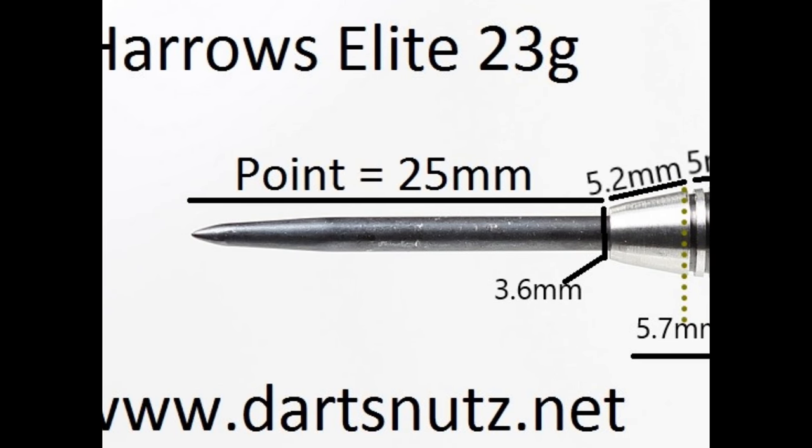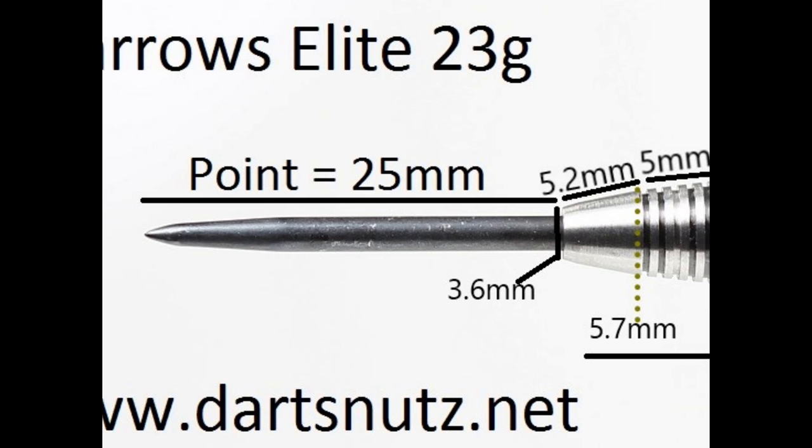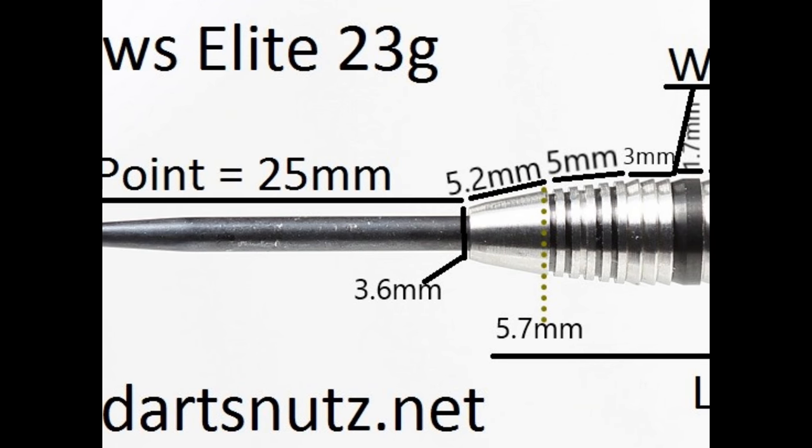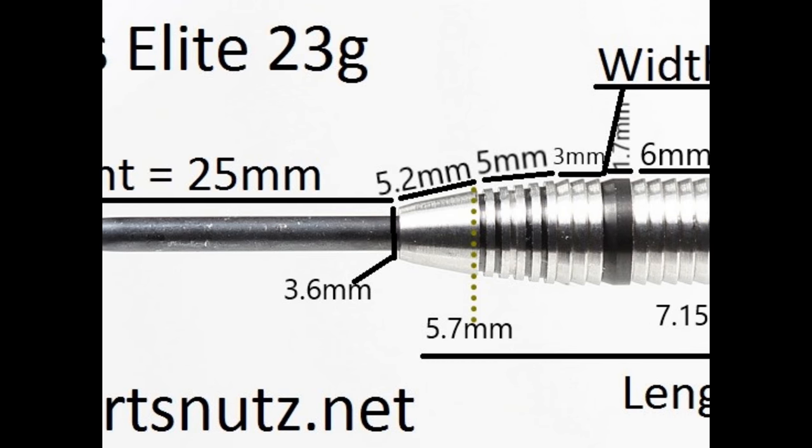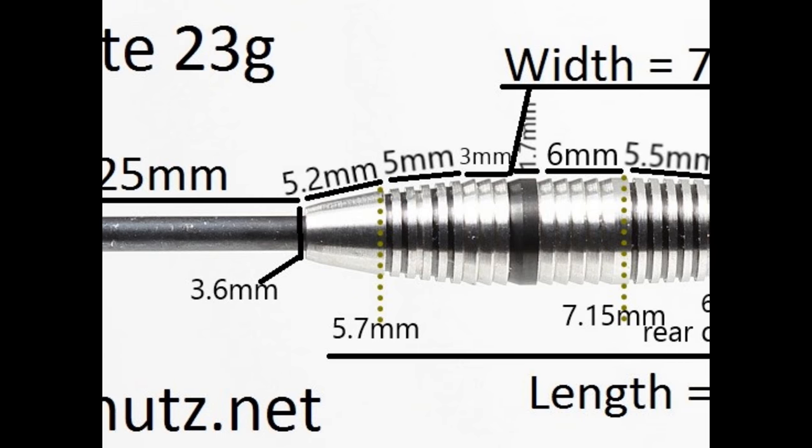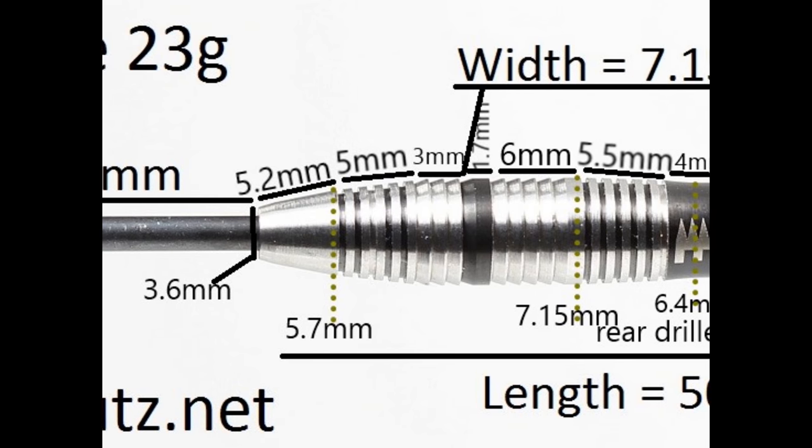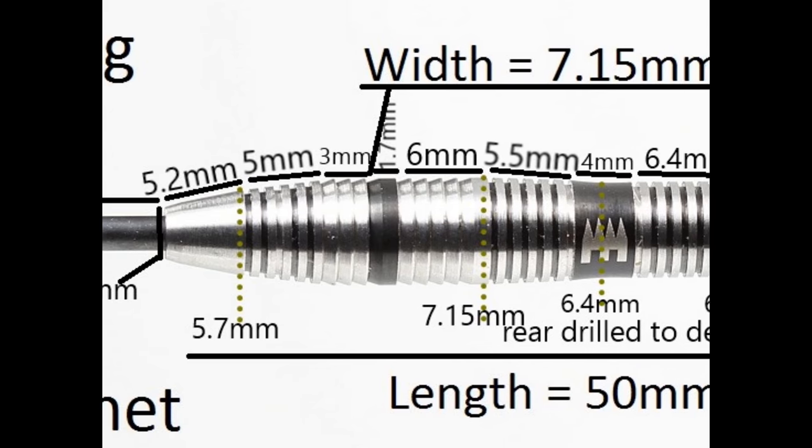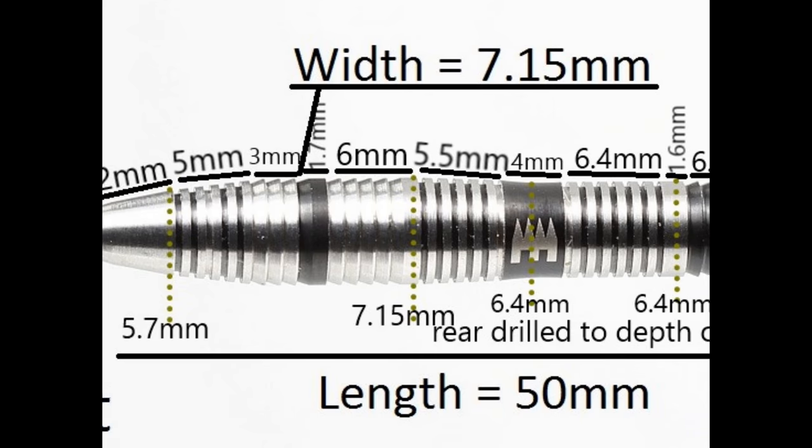The darts are fitted with a 25.5mm black coated point. There's a tapered nose to the barrel with a smooth section of 5.2mm wide, then thin cut rings and grooves of 5mm. That's followed by some razor grip of 3mm wide and then a band with the black nitride coating that's 1.7mm wide.